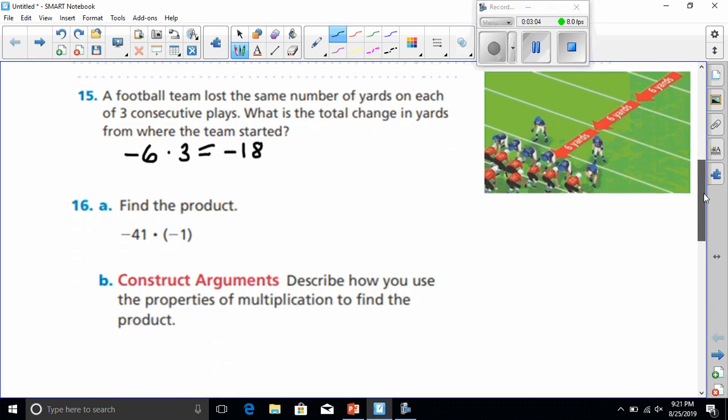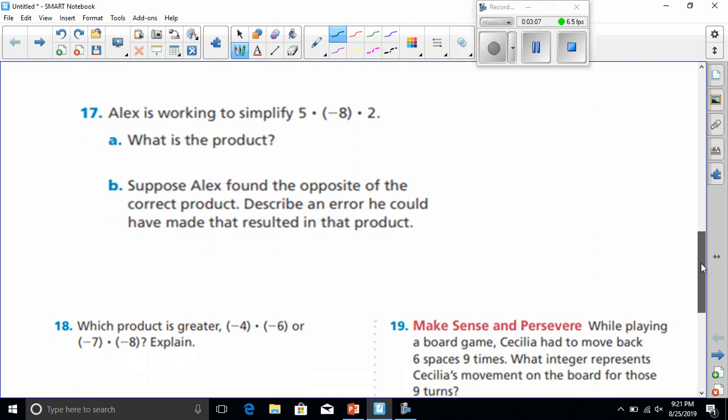All right, let's scroll down here to number 17. It says Alex is working to simplify 5 times negative 8 times 2. All right, to do this, we have to go ahead and use our rules again. 5 times negative 8 is going to give us, see, 5 times 8 is 40. And we have a positive times a negative, so that would be negative 40. And so now we have negative 40 times 2. Once again, we have a negative number times a positive number. So that's going to go ahead and give us a negative answer. And 40 times 2 is 80. So the product of 5 times negative 8 times 2 is negative 80.